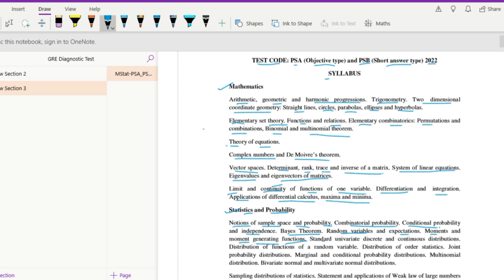Then we have standard univariate discrete and continuous distributions, then distribution of functions of a random variable, then distribution of order statistics, then joint probability distributions, then marginal and conditional probability distributions, then multinomial distribution, bivariate normal and multivariate normal distributions.